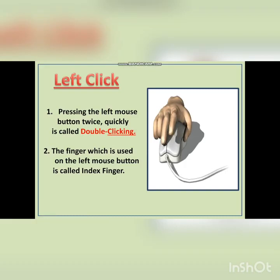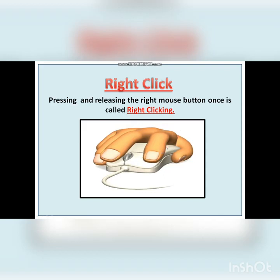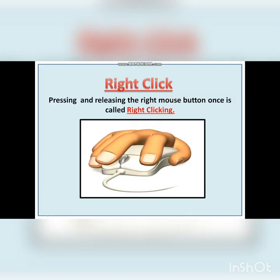Right click. Pressing and releasing the right mouse button once is called right clicking. In the video provided on the slide, it shows that the middle finger is placed on the right mouse button, and when we click it, it is called right clicking.